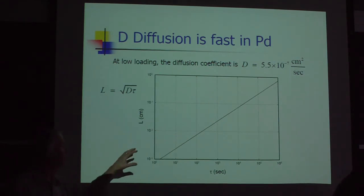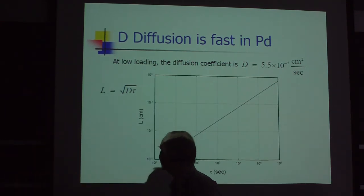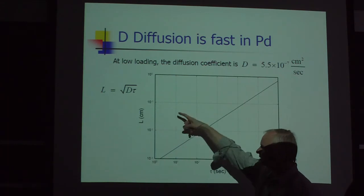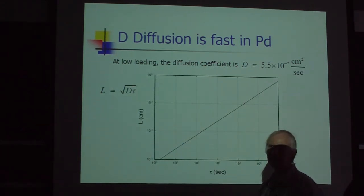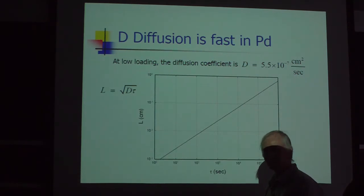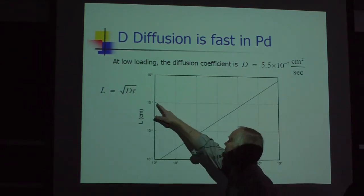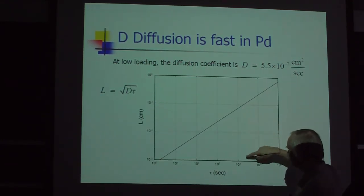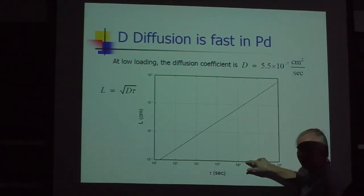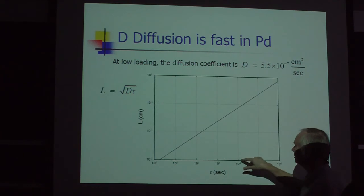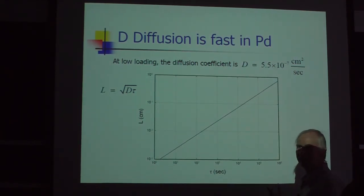One of the things that's interesting is that with an estimate for your diffusion coefficient, you can get an estimate relating spatial and time scale. There's a characteristic distance associated with a characteristic time when governed by diffusion. For example, here's seconds, here's distance. In the Fleischmann and Pons work, the cathodes were three millimeter diameter as I recall. So here's one millimeter. We take this and go down. This is 10^4 seconds. 3600 seconds is an hour. So something like 10 hours-ish diffusion time gets to a distance of one millimeter.